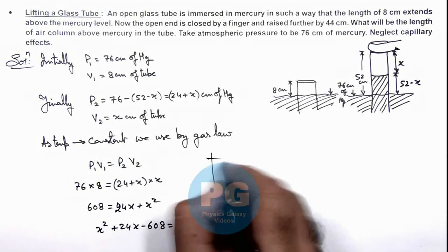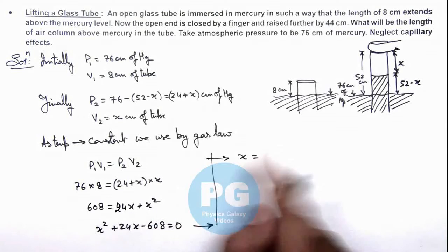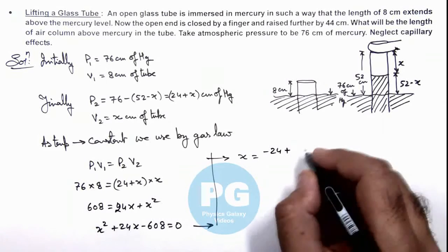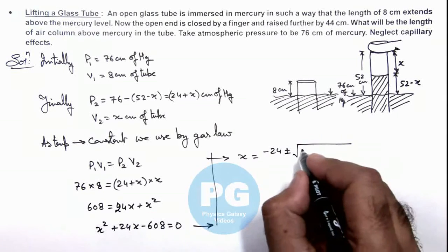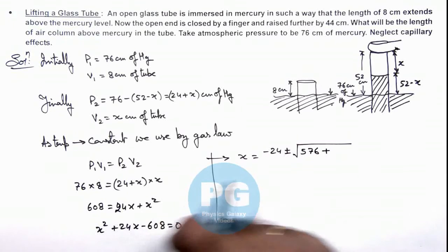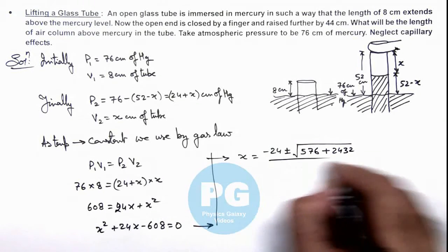The result of this quadratic equation is minus b, which is minus 24, plus or minus root of discriminant: 24 squared is 576 plus 4 times 608 is 2432, divided by 2.